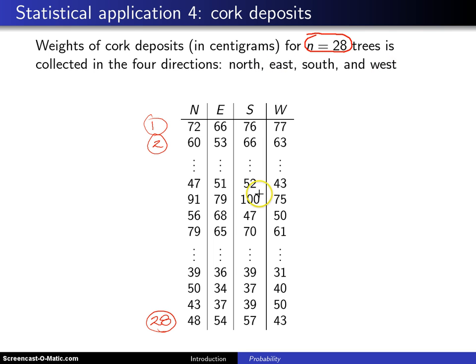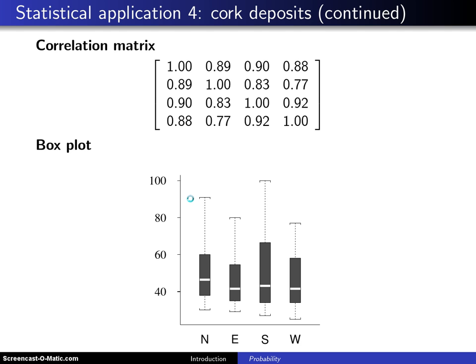If you look at the data set, it turns out that this value of 100 is the maximum value of all the values that are collected. And if you look in this same row, you will note that 75 is a little on the high side, and the same is true of 79 and 91. So immediately you suspect that there might be what is known as positive correlation between the various directions.